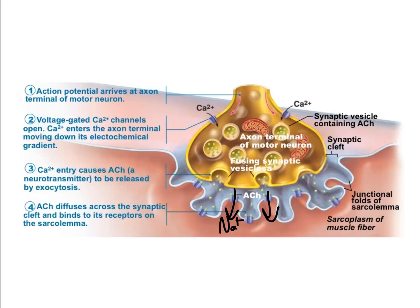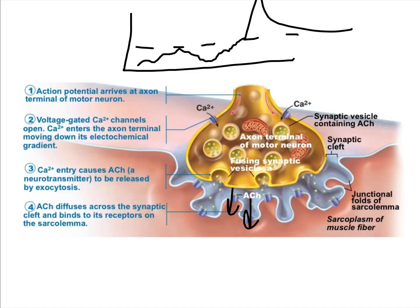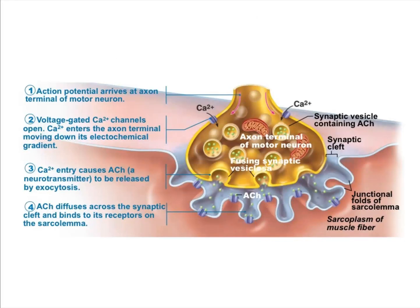When acetylcholine binds its receptor, sodium flows in. If we get enough sodium — just like the graph from the nervous system — once we hit threshold, we have a spike in an action potential. The amount of sodium coming through these ligand-gated ion channels that respond to acetylcholine determines where we are on the graded potential scale. The graded potential is a result of sodium ions flowing through these ligand-gated channels.